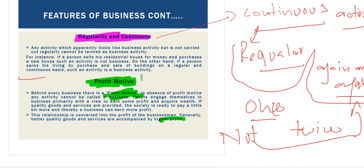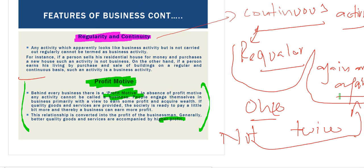If we provide good quality, we will get more profit. If we do not provide the product with good quality, we will not get as much profit margin. So if we want to increase the margin of profit, we have to increase the quality of the product. The basic motive of business is to gain profit, so companies are advised to provide products with good quality.